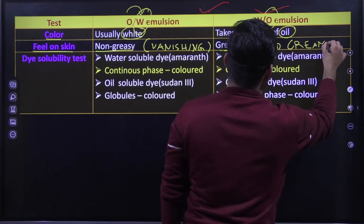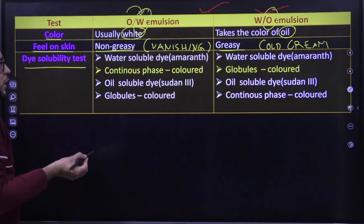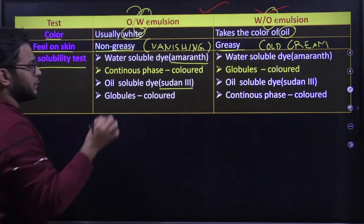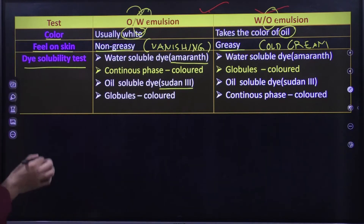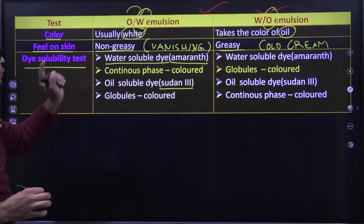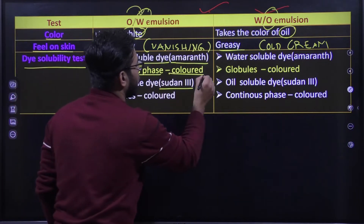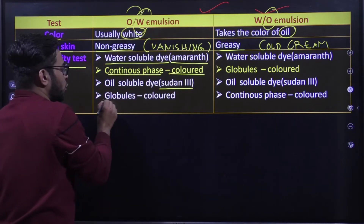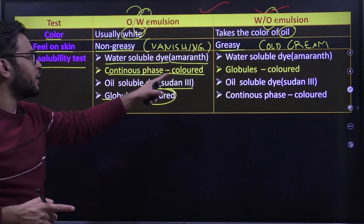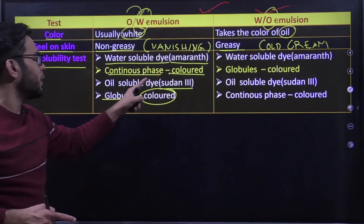Dye solubility test में हम दो dyes यूज करेंगे — amaranth और Sudan 3. Amaranth एक water-soluble dye है. Oil in water में continuous phase water होता है, तो अगर water-soluble dye amaranth यूज करो तो continuous phase color दिखाएगा. अगर oil-soluble dye यूज करो तो globules color दिखाएंगे.